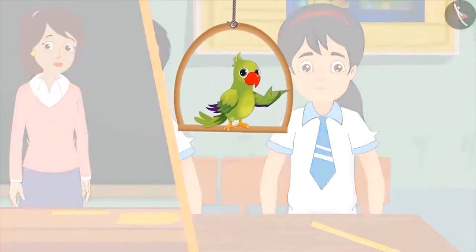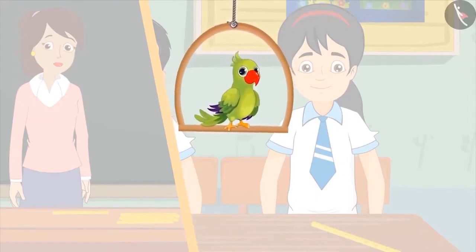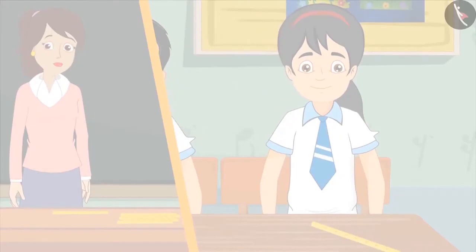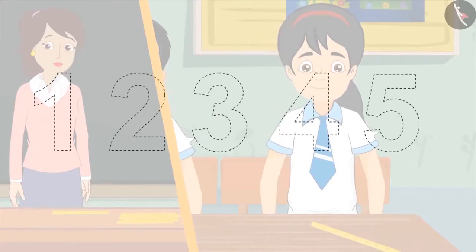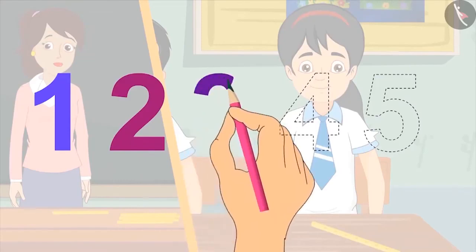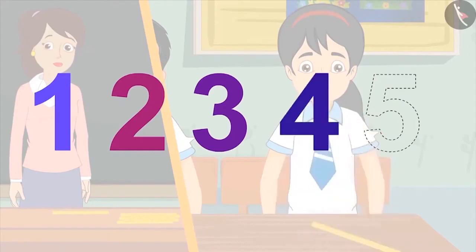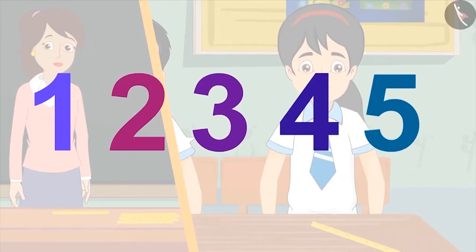So children, can you also count 5 things just like Pinkie? You have seen how you can write each number as a special symbol. Let us learn to write these symbols. We write 1 like this, 2 like this, 3 like this, 4 like this, and 5 like this. All of you must practice writing these symbols.